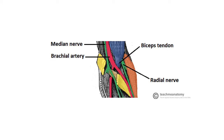The cubital fossa acts as a conduit for structures to enter and leave the forearm. The radial nerve, biceps brachii tendon, brachial artery and median nerve all pass through the cubital fossa.